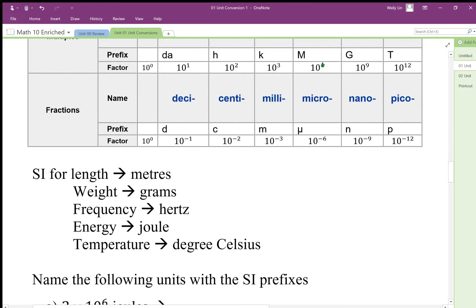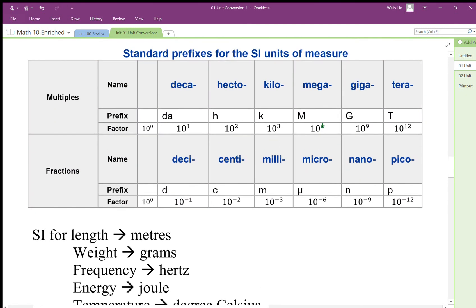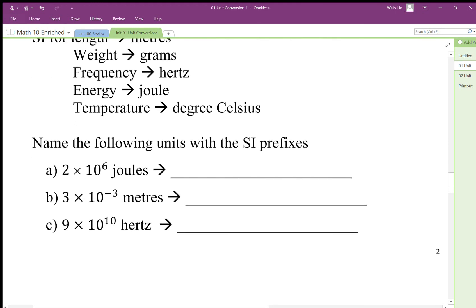So we go to 2 megajoules. This means we have 2 million joules.